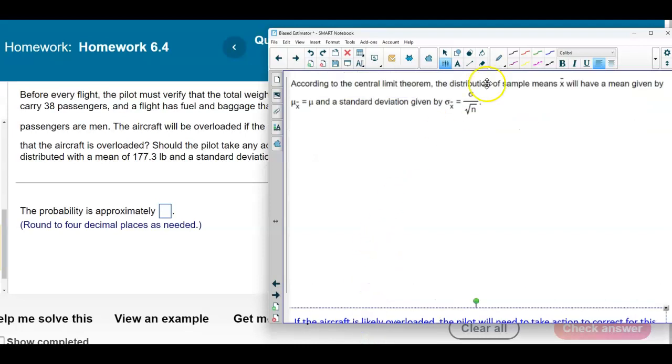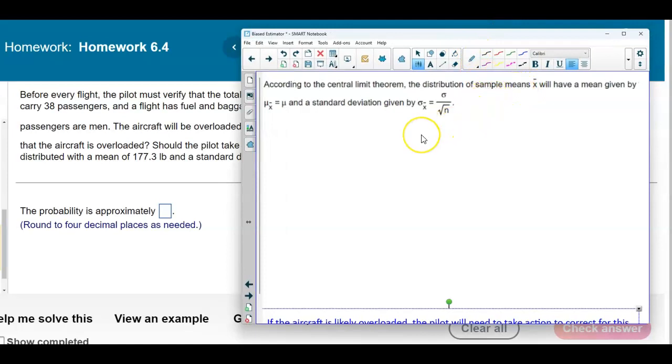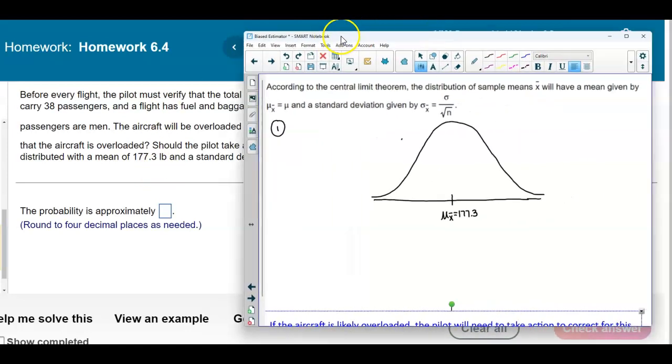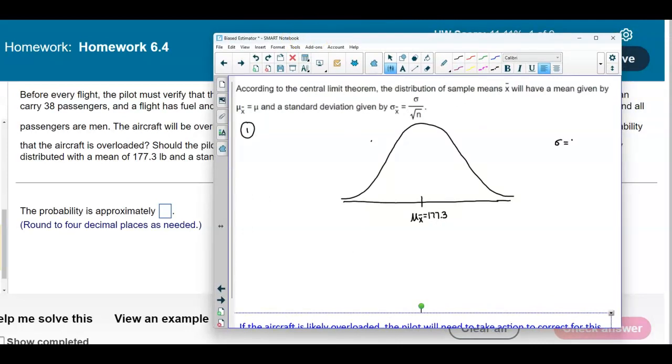According to the central limit theorem, we're going to use the following formulas because it's given to be normally distributed. The first thing we're going to do is draw a picture. Here's our bell curve, and it tells us that the mean is 177.3, so the mean of the sample means is 177.3, and the standard deviation is 35.3.